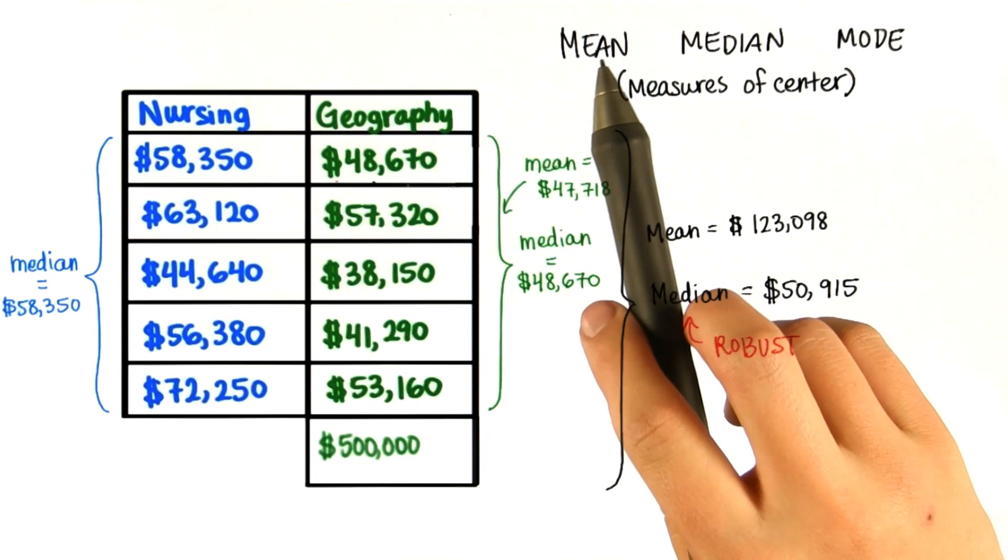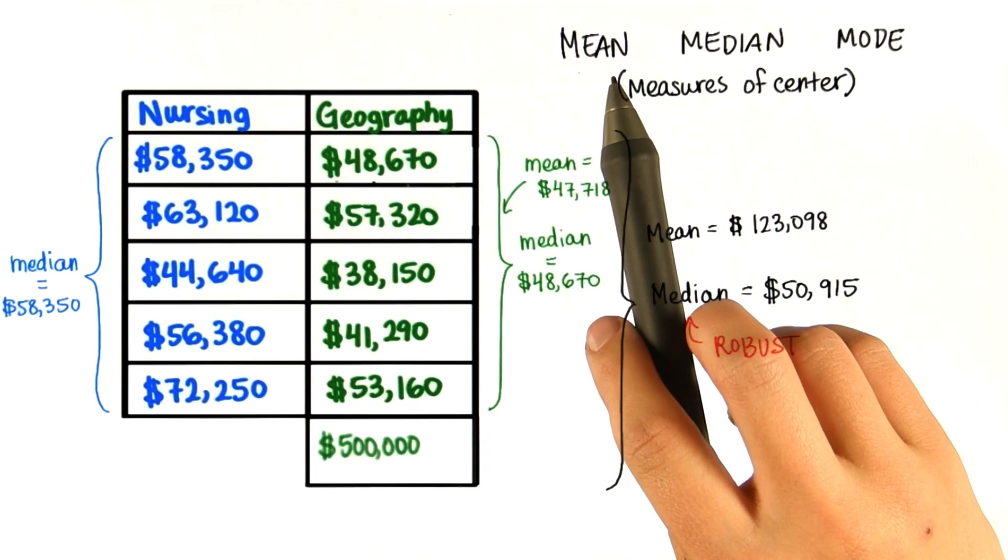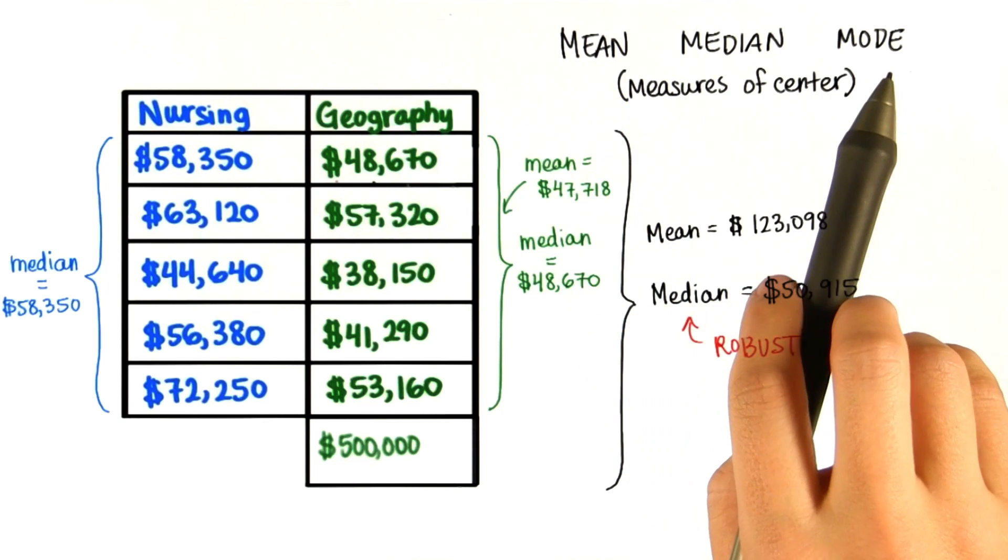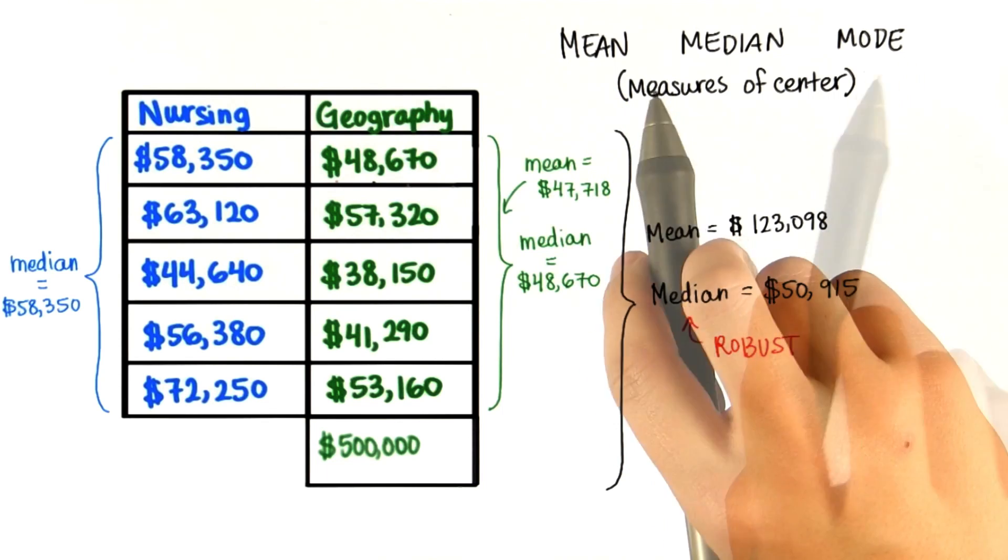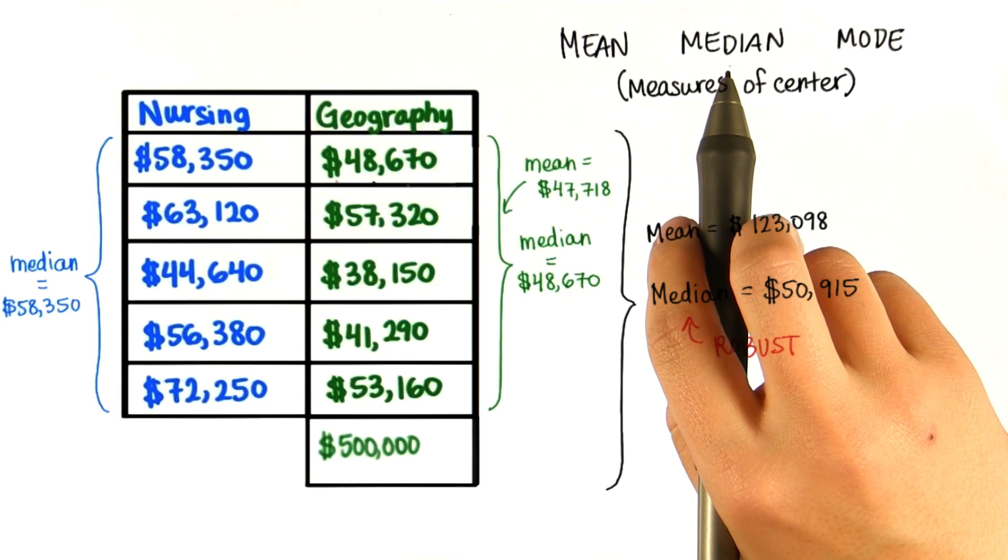As you've seen though, sometimes the mean doesn't describe the center because of an outlier. Sometimes the mode doesn't describe the center, and the median doesn't take every data point into account.